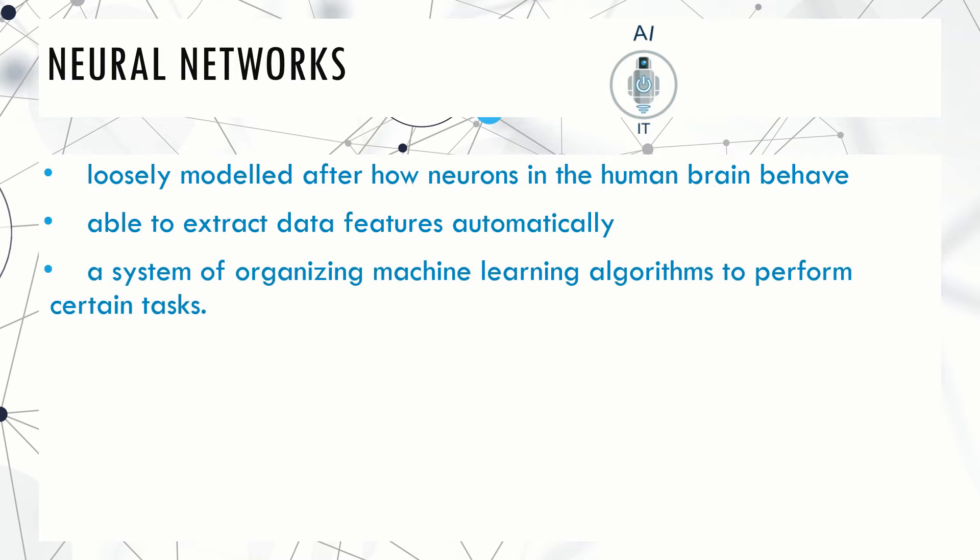A neural network is essentially a system of organizing machine learning algorithms to perform certain tasks. They are a fast and efficient way to solve problems.